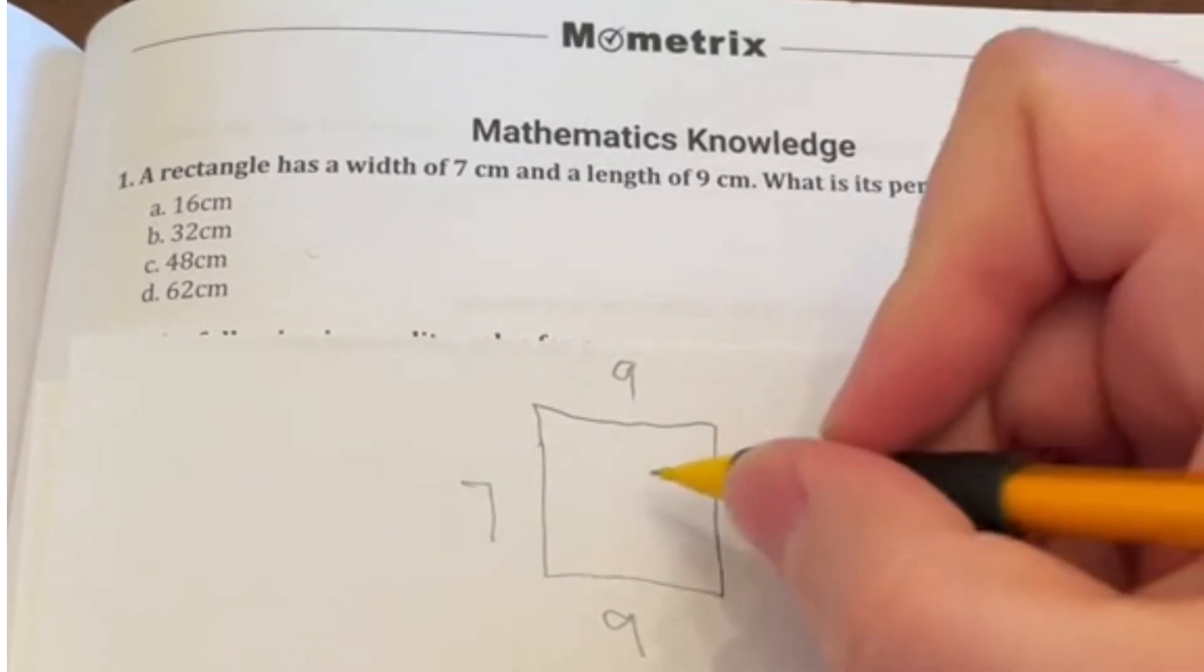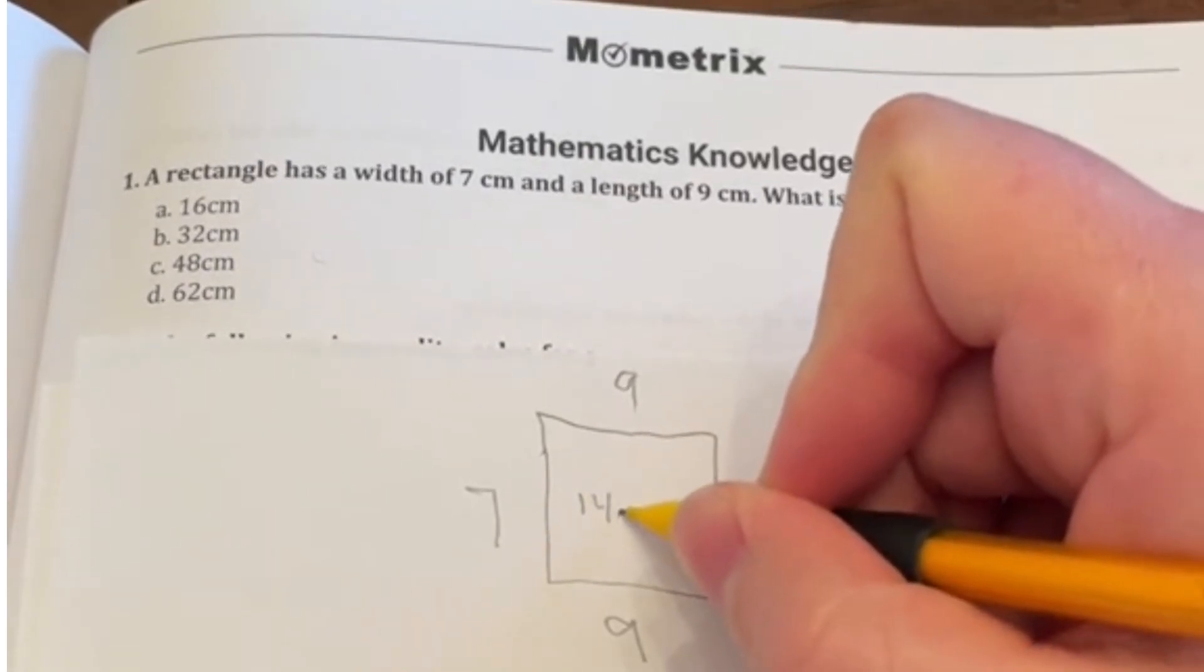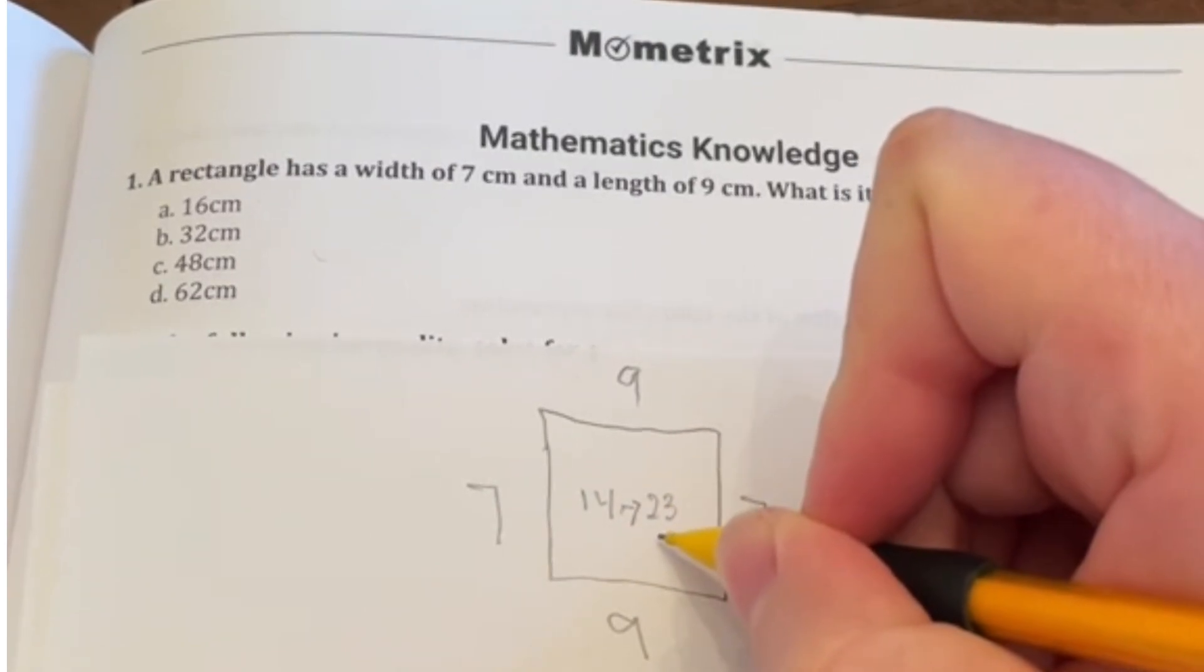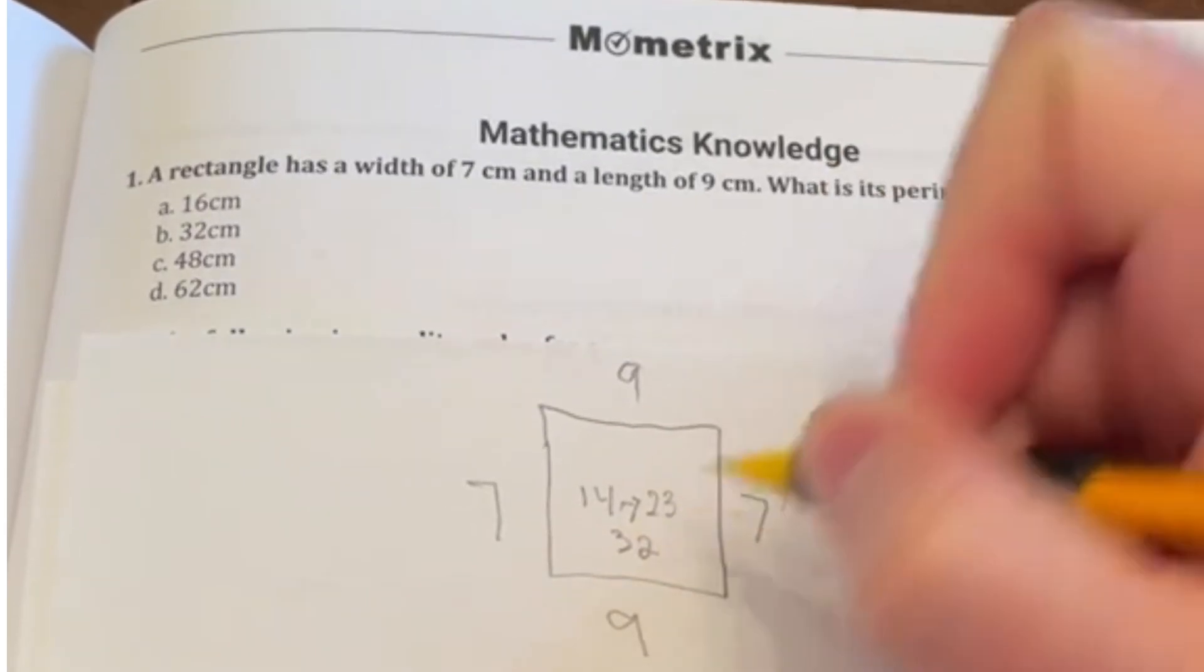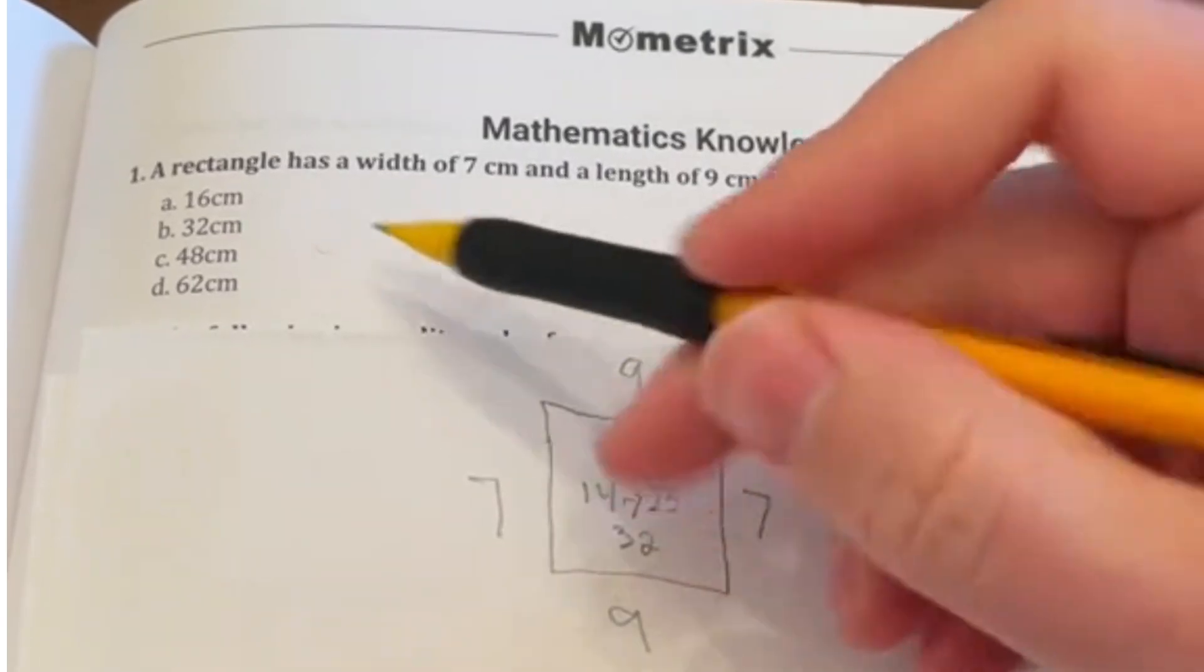So let's go ahead and add this up. We have 7 plus 7 is 14. And then if we add another 9 to that, then that's going to take us to 23. And if we add another 9 to that, it's going to take us up to 32, which means our final answer here should be B, 32 centimeters.